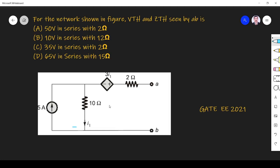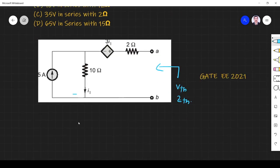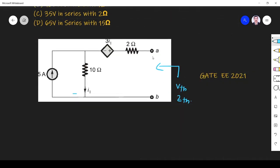Hi friends, in this video let us solve a network theory related question asked in GATE 2021 Electrical Engineering paper. The question is: for the network shown in figure, Vth and Zth seen by terminal AB is - so across this terminal we have to find Vth and Zth. Vth is nothing but open circuit voltage, so AB is open circuit already.